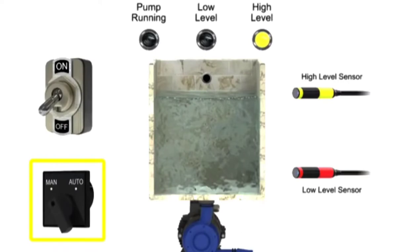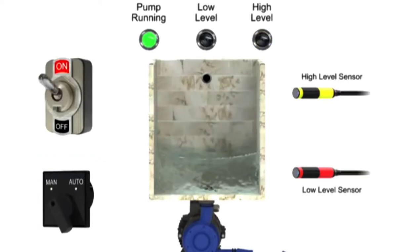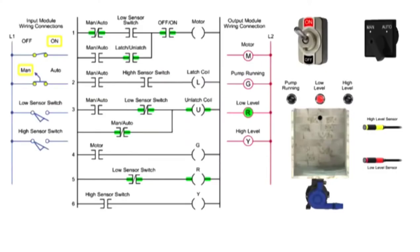In Manual mode, the program controls the water level by monitoring the low-sensor switch input. In this mode, the pump motor turns off when the low-sensor switch is off and turns on when the low-sensor switch turns on.